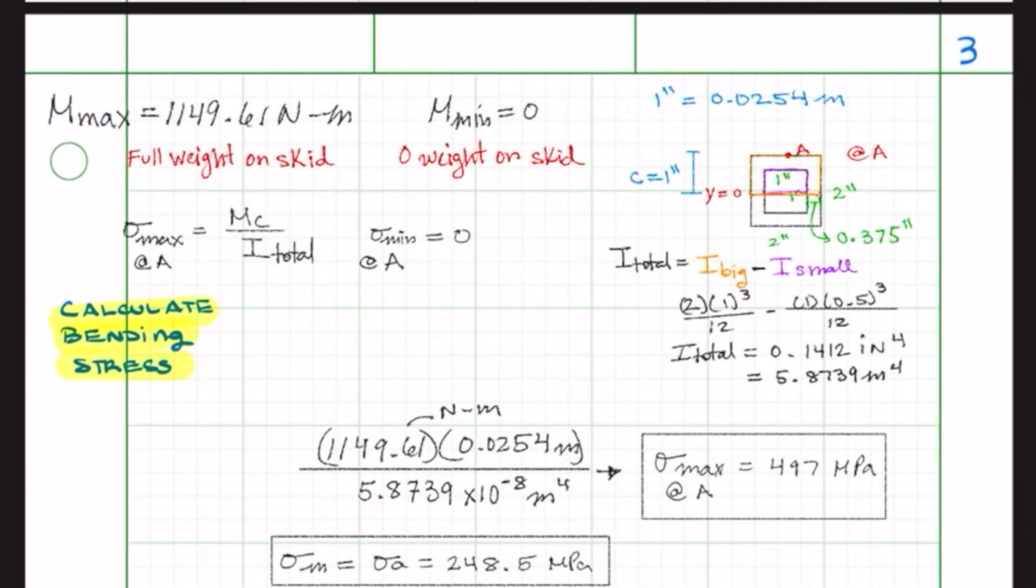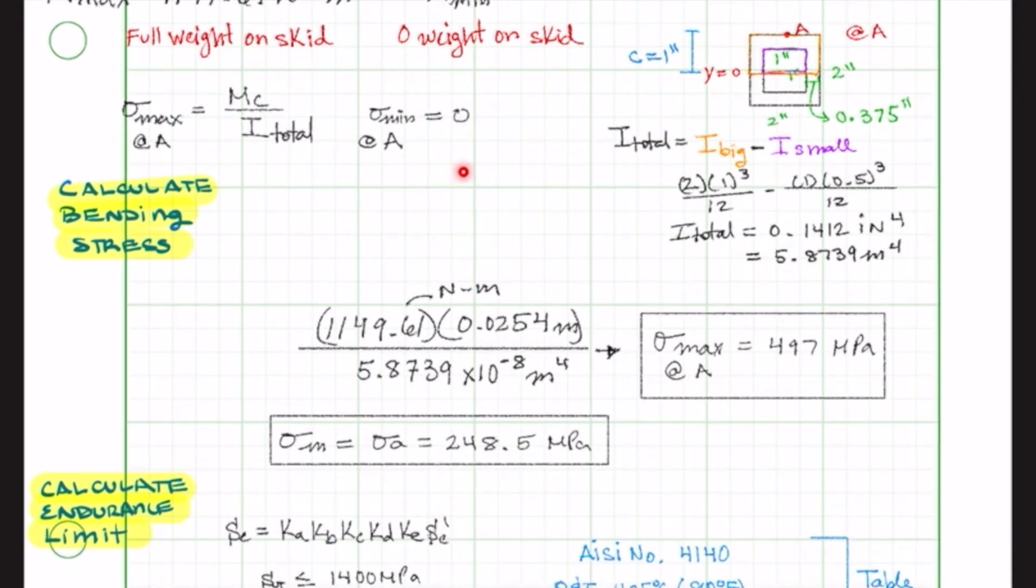We then calculated sigma max at point A of the drawing to the right, where we added our max moment from before and solved for the total moment inertia and C, which is the distance from our neutral axis to point A, which is one inch. Our sigma min is zero, since our minimum moment is at zero when there's no car weight on the skid, and then we calculated our sigma mean and alternating, which is sigma max divided by two.